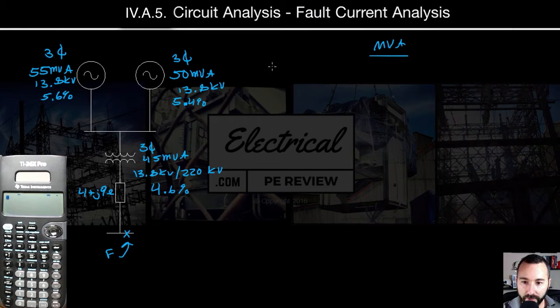All right, welcome back. Let's take a look at this problem over here on the left. This time we've got two generators in parallel, followed by a transformer. You'll notice the secondary voltage this time around is 220 kV, just to change things up. It's got an impedance of 4.6%. We have a line impedance of 4 plus J9 ohms, once again, and a fault at this bus down here.